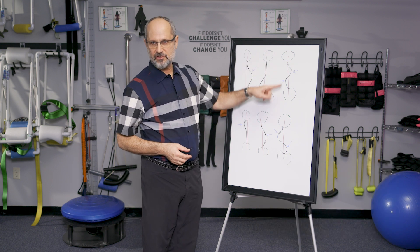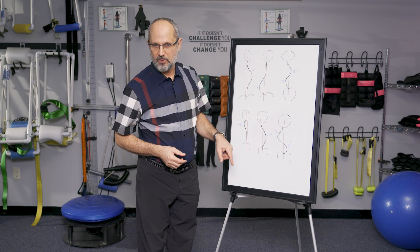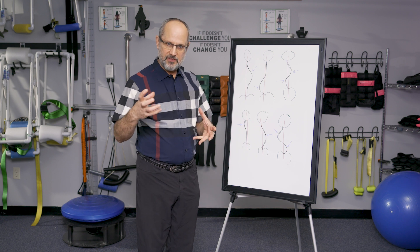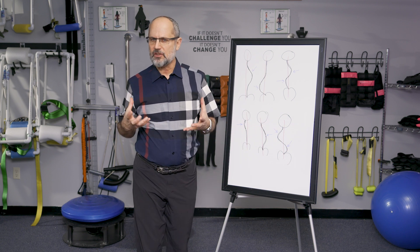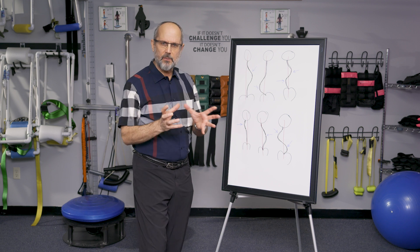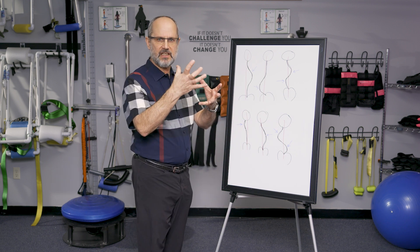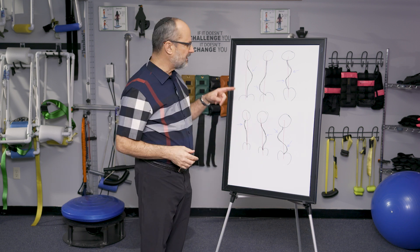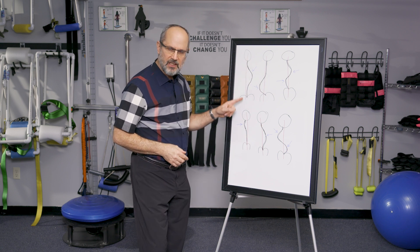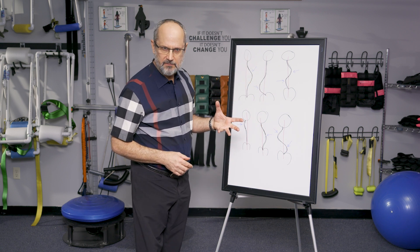Here we have an S-curve, a double major some people will call it, because we have two curves on top of each other. This is more difficult and takes a little more finesse to treat, because we have to make sure we don't make one better and the other one worse — we have to lift both curves simultaneously. In the single-curve situations, we can put all of our attention in one direction and reduce the curve a little bit more aggressively.